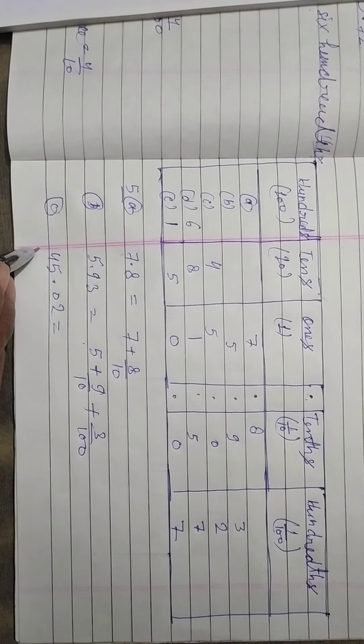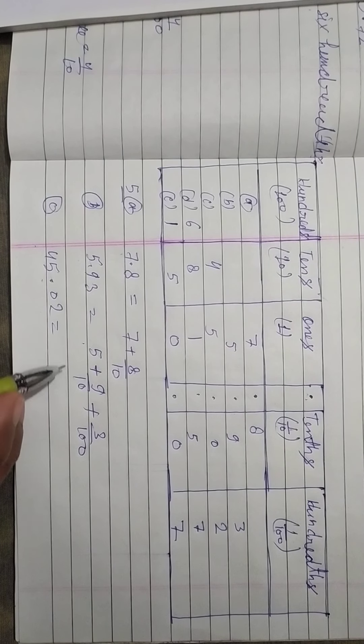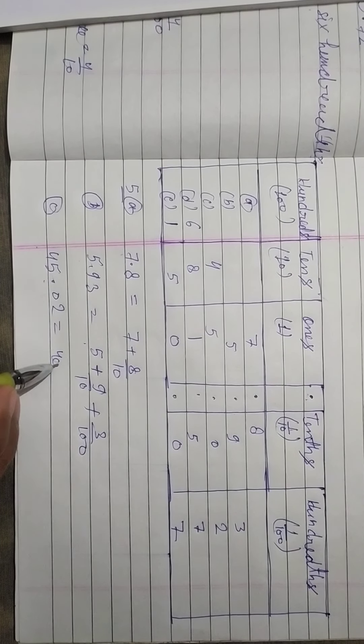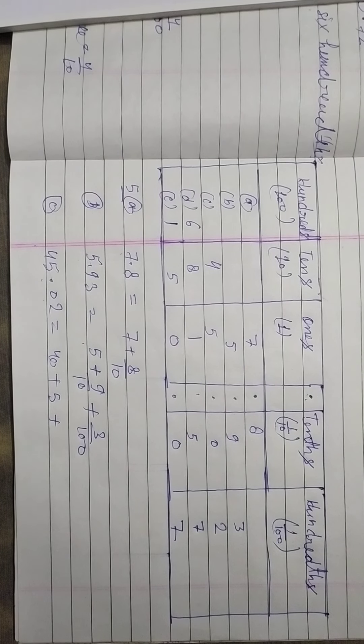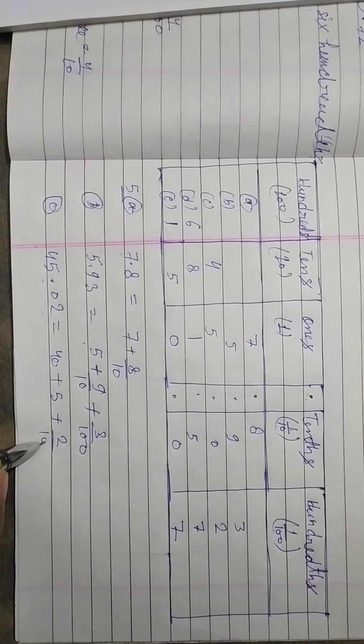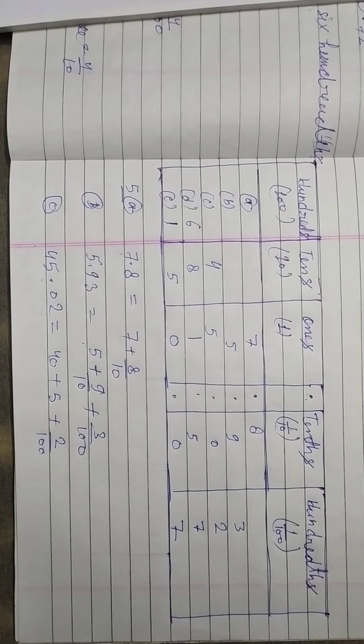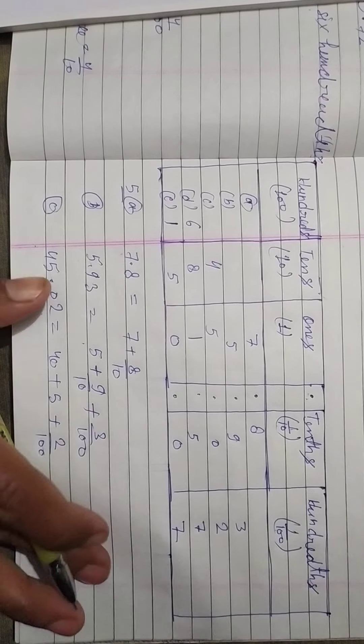Clear, now question number C. Look at 45.02. So now it is 45, so how do we write it? 40 plus 5, plus 0 we leave it, 2 then we write it. So here is 200th place, so what will it be? 2 upon 100 will come. So question number A complete, B complete, C complete.